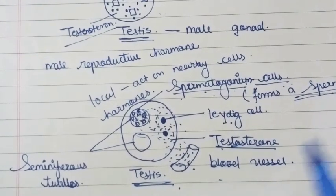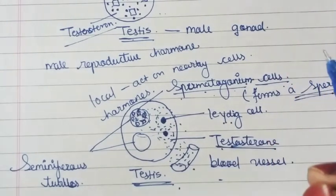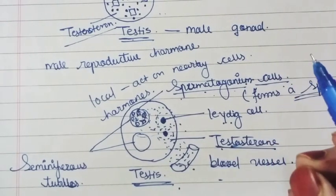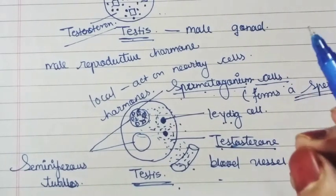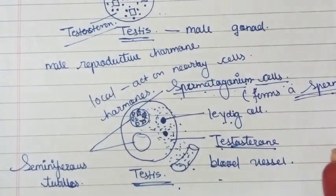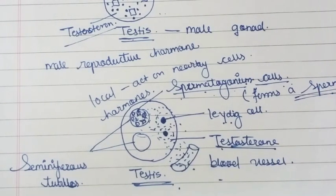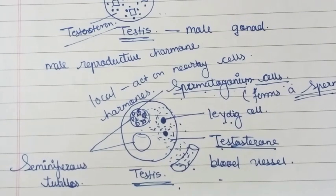In the next video, we will cover the definition of endocrinology, a brief description of endocrinology, and the glands present in the endocrine system — including the adrenal gland, thyroid gland, and pituitary gland. Thank you for watching.